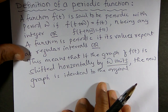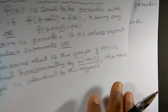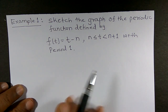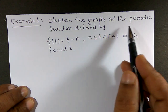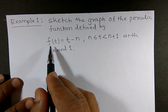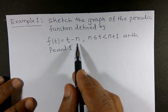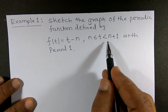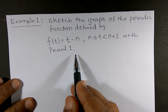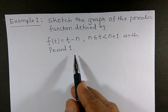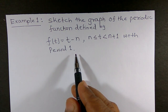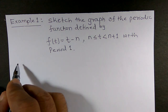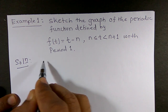Now we can view one example for a periodic function. Sketch the graph of the periodic function: f(t) = t − n, where n ≤ t < n+1, with period 1. Here n is an integer.